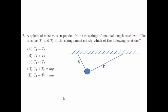A: T1 equals T2. B: T1 more than T2. C: T1 less than T2. D: T1 plus T2 equals MG, or E: T1 minus T2 equals MG.